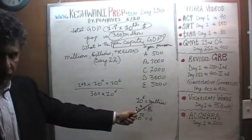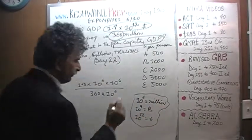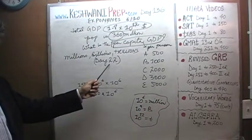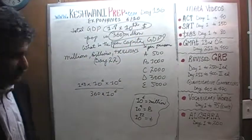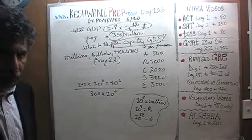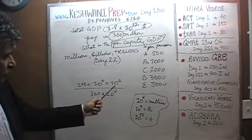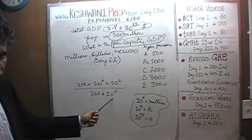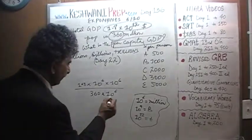10 raised to 6 is a million. Again, if you have trouble understanding this concept, watch day number 22. We covered this topic, millions, billions and trillions on day 22. A million is 10 raised to 6. So here we have 10 raised to 6 on the top, we have 10 raised to 6 on the bottom. We can divide the top and the bottom by 1 million and we can get rid of this 10 raised to 6.